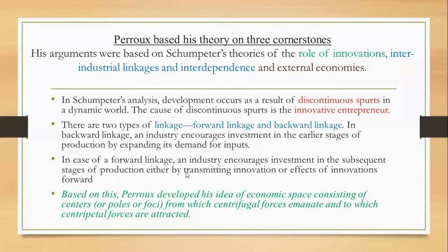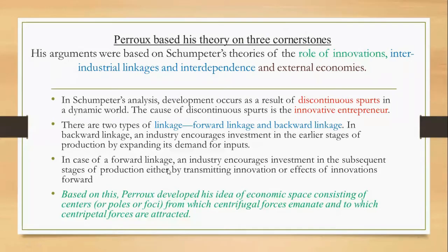Regarding forward linkage: if there is a plastic industry, this industry will encourage investment in subsequent stages of production. This plastic industry's end product will be the raw material for various other subsequent industries — for example, toys. Some toy industry will develop in that region because they will easily get the raw material from the plastic industry. Similarly, bucket and mug making firms will also develop because they can easily get their raw material from this main industry. That is forward linkage.